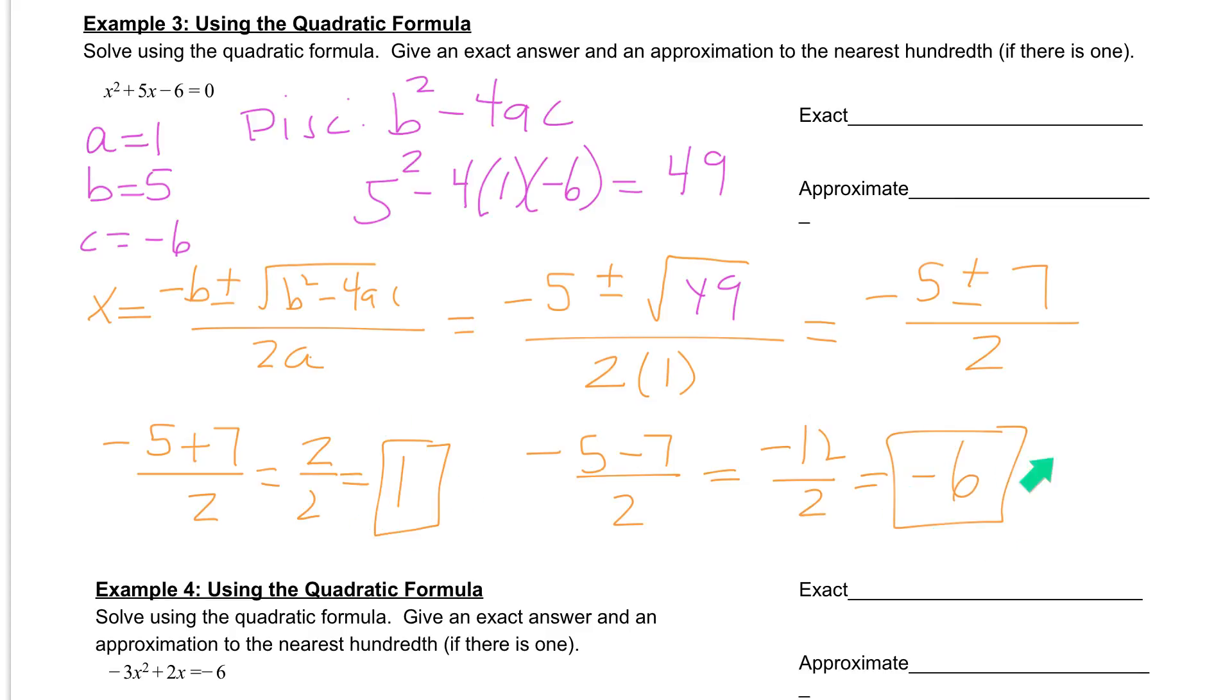These are exact answers, 1 and negative 6. So we're going to write them in the exact answer. So we have x equals 1 and negative 6. Now, if I was asking for an approximate answer, there is nothing to round these to. These both are rational numbers, and they're whole numbers. So even with the approximate answers, we're still going to just write in what we have. There's no need to round. But x is still going to be equal to 1 or negative 6. So depending on which test you get, whether it's exact or approximate, your answers will be 1 or negative 6.